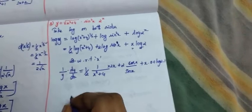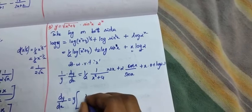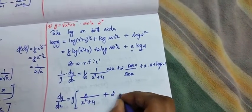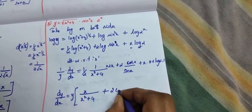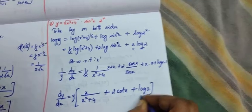So what is your answer here? dy by dx is equal to y into 2 to cancel 1 by x divided by x squared plus 4 plus 2 cos x by sin x is nothing but our cot x plus log 2. Now write the value.